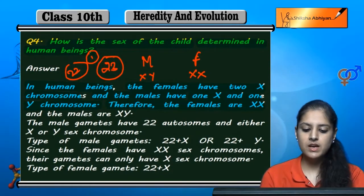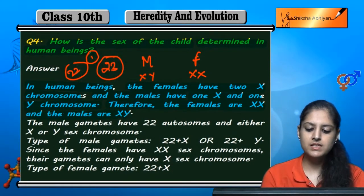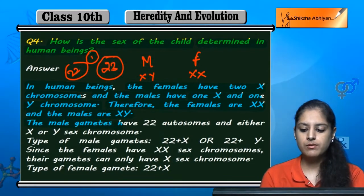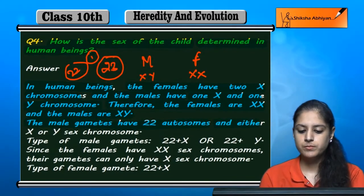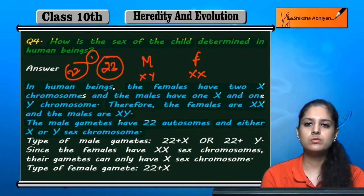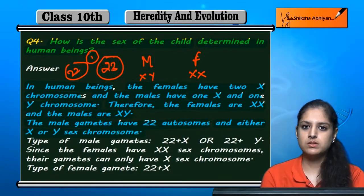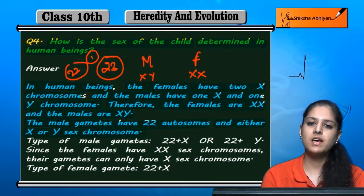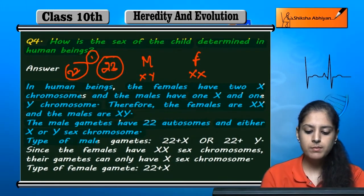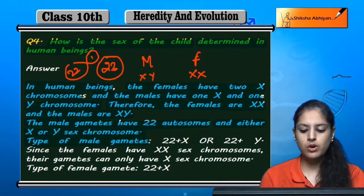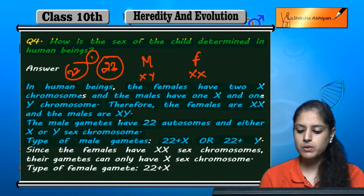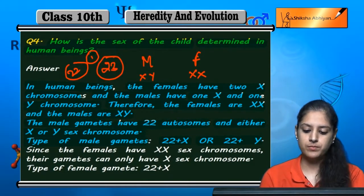So the females are XX and the males are XY. Now the male gametes have 22 autosomes and either X or Y sex chromosome. Both have 22 autosomes. The male can have either X or Y. So the two types of male gametes are: 22 plus X, or 22 plus Y.